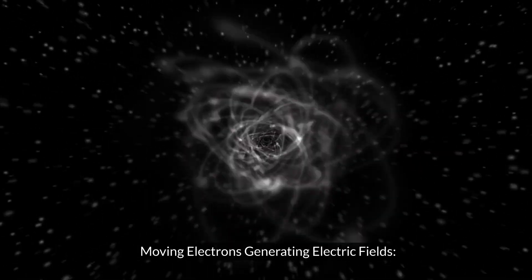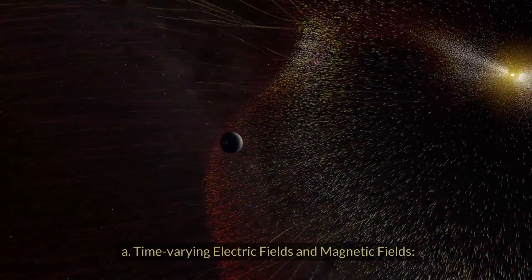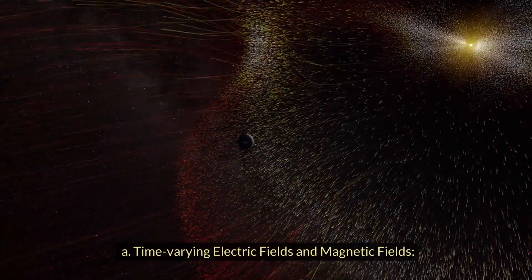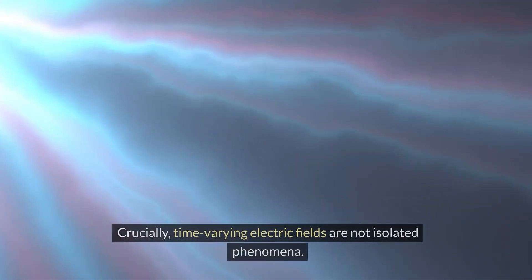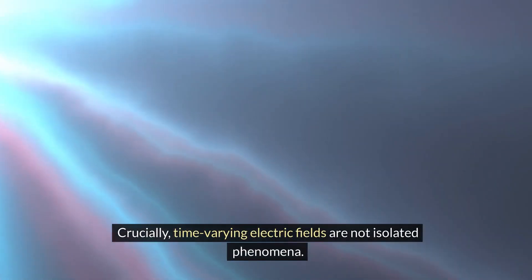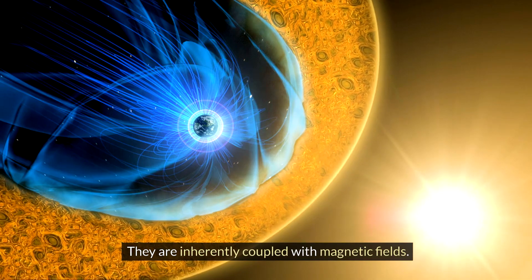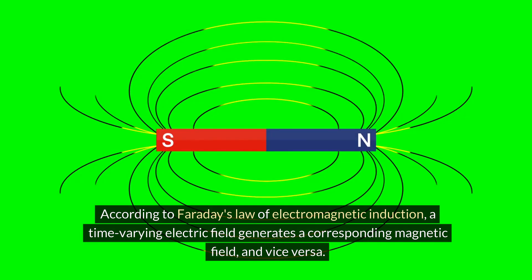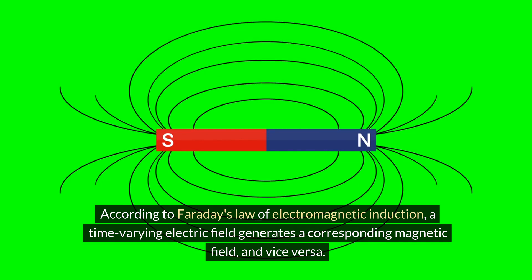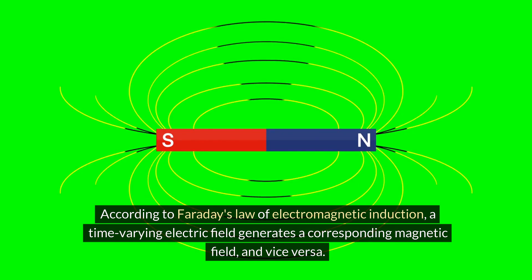Moving electrons generating electric fields. Time-varying electric fields and magnetic fields: Crucially, time-varying electric fields are not isolated phenomena. They are inherently coupled with magnetic fields. According to Faraday's law of electromagnetic induction, a time-varying electric field generates a corresponding magnetic field, and vice versa.